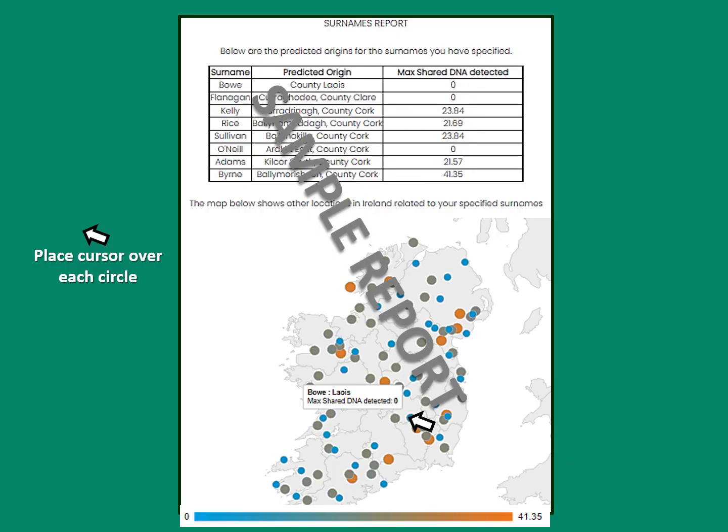The final part of the report links each ancestral surname with a DNA-revealed hotspot. You can see here that many of these link back to the most notable location within County Cork, and you can also place the cursor over the area of interest to see the amount of shared DNA in each location.